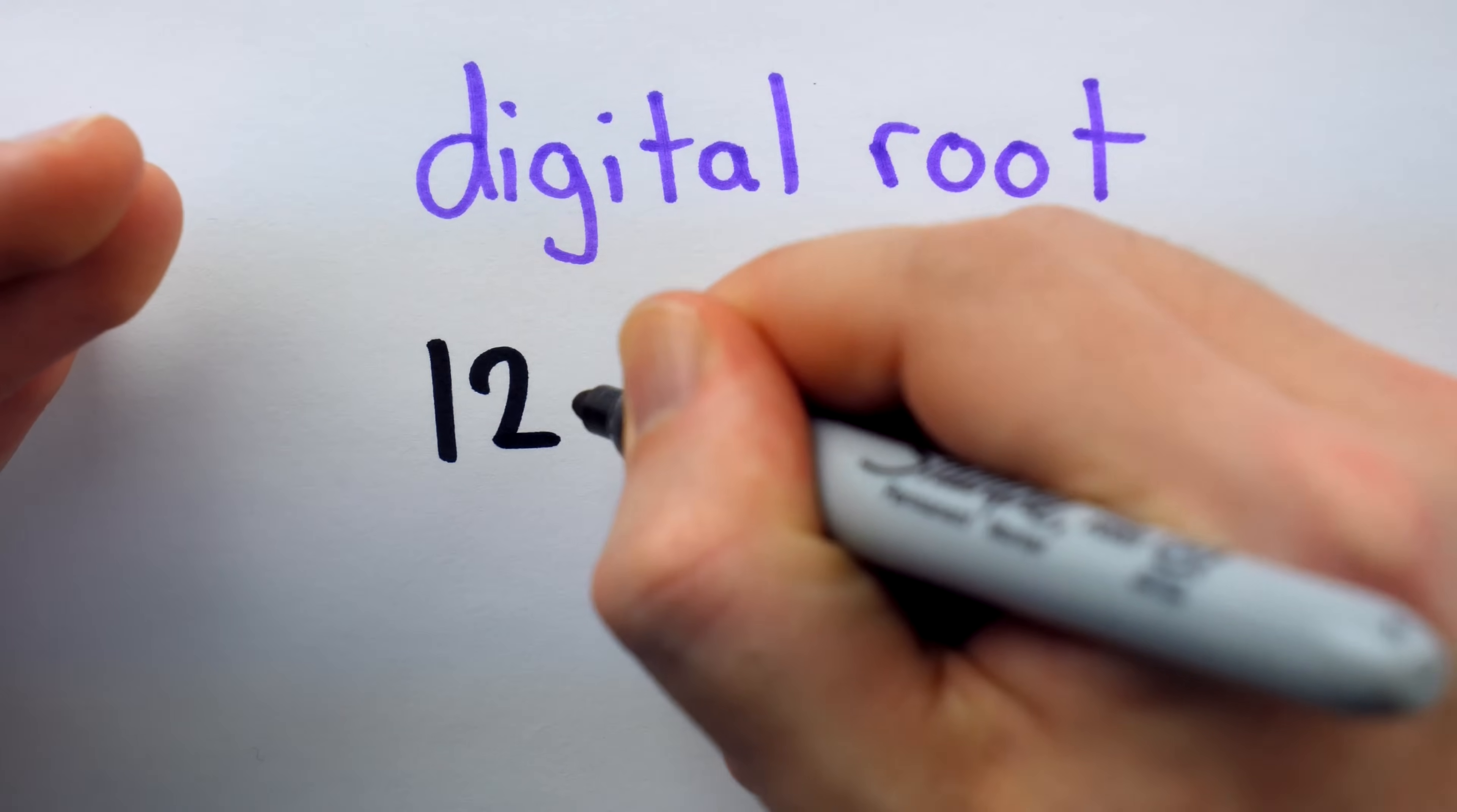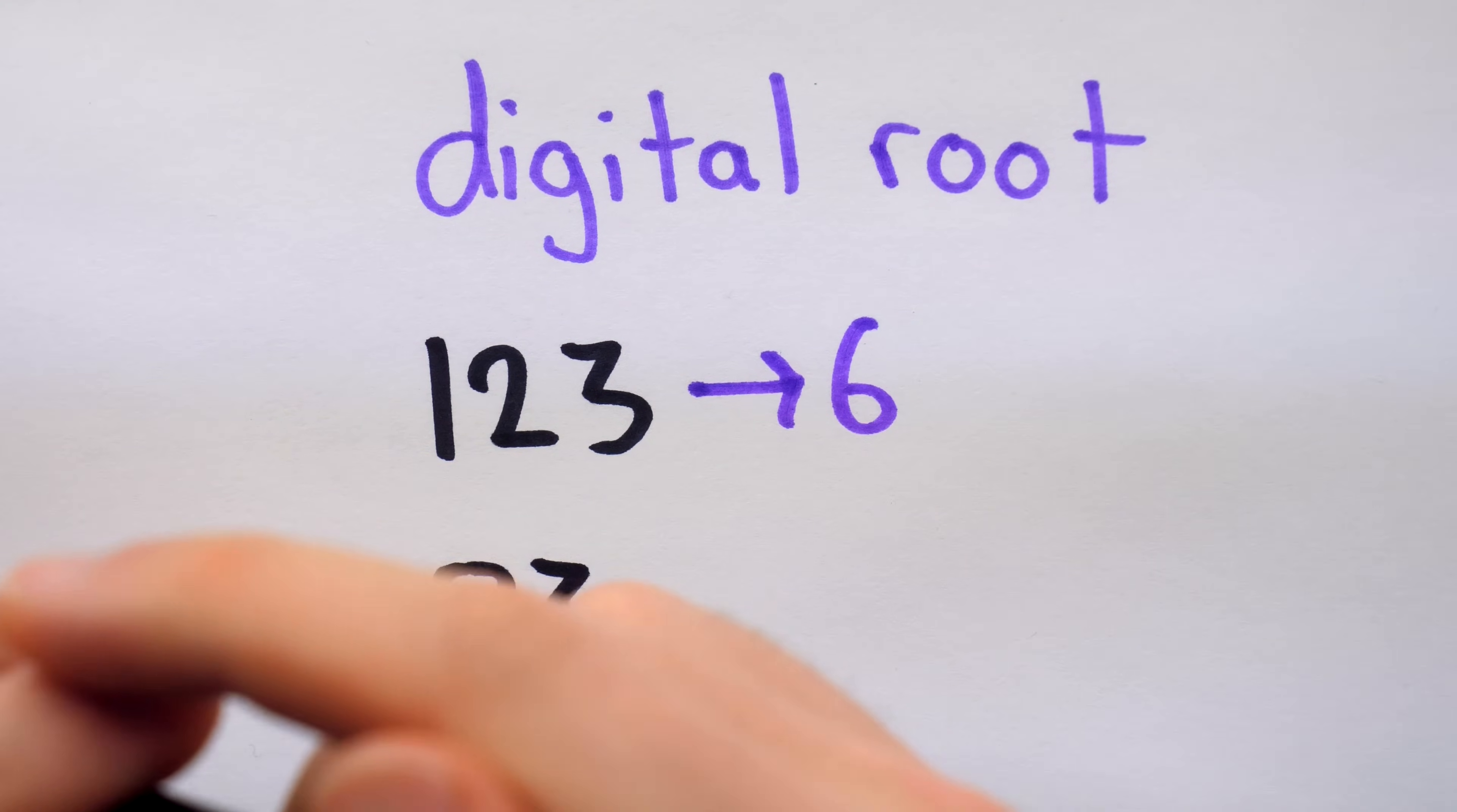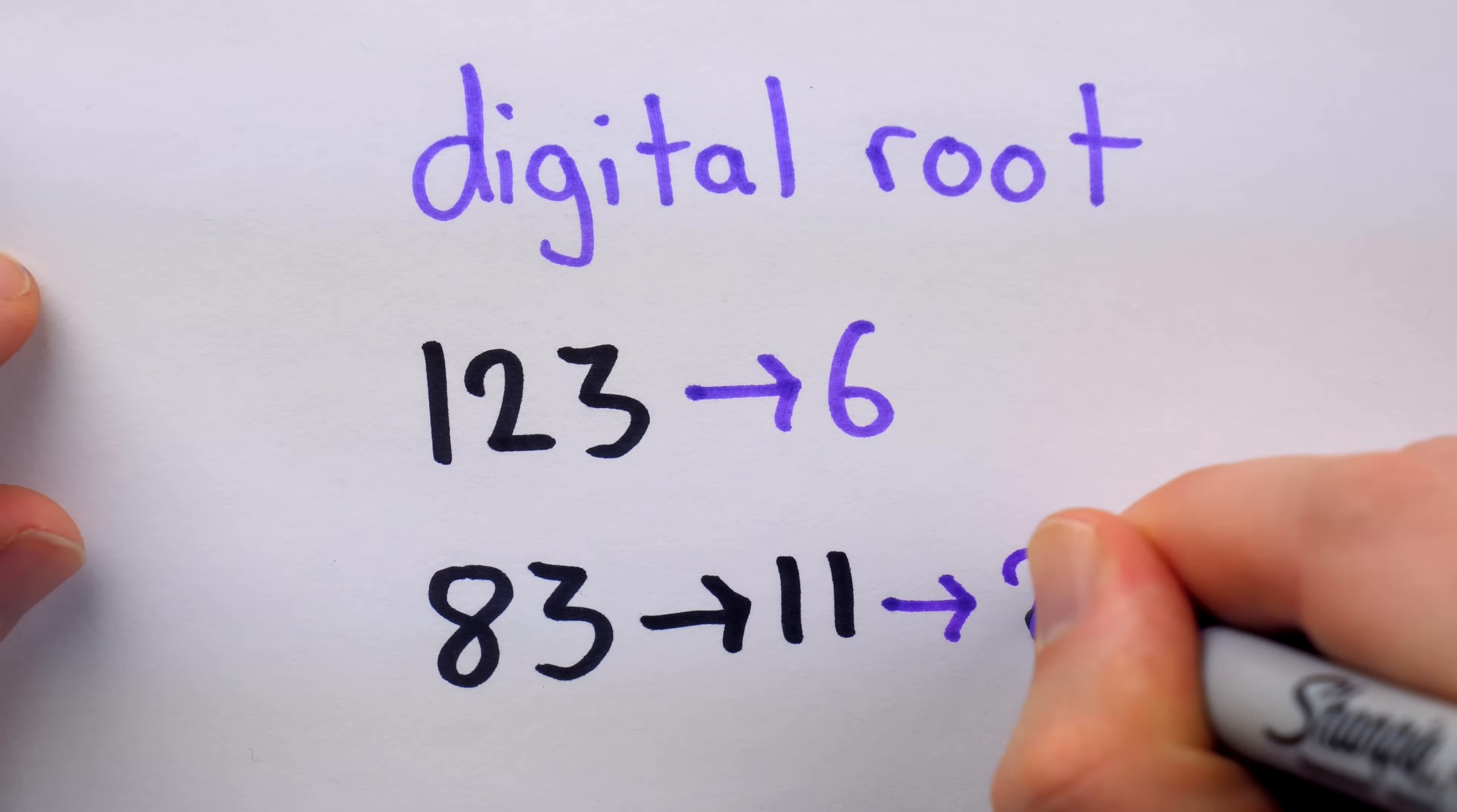For example, if we have the number 123, its digital root is found by summing its digits, which gives us 1 plus 2 plus 3 is 6. Another example would be 83. The digital root of 83 is found by adding its digits to get 11, but because that's not a one-digit number, we would then have to add the digits of 11 and find that the digital root is 2.